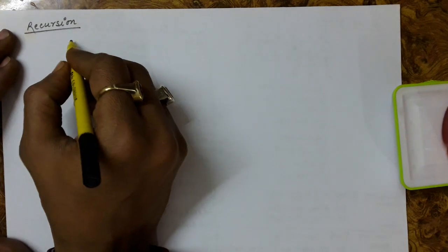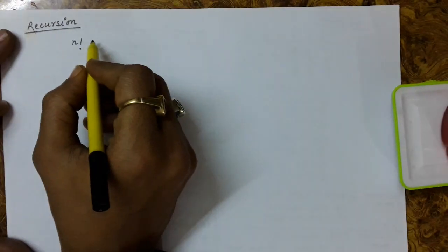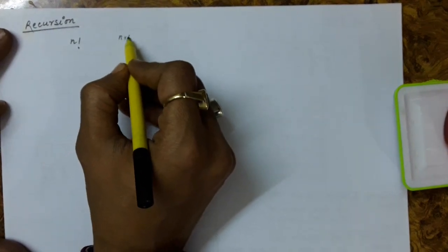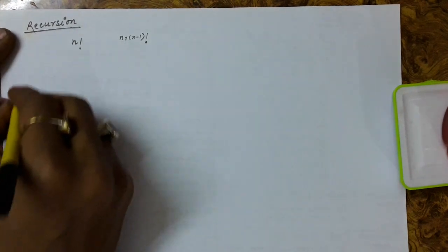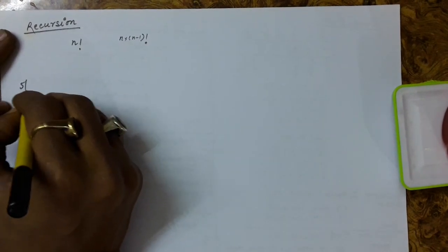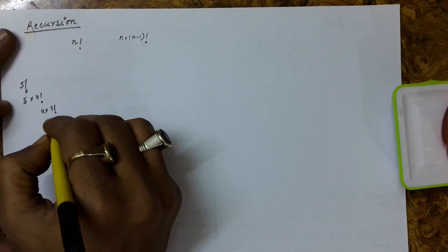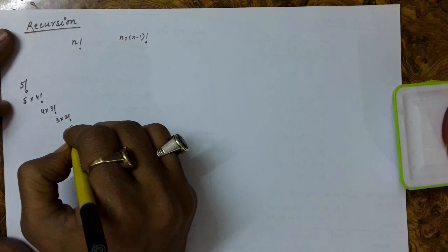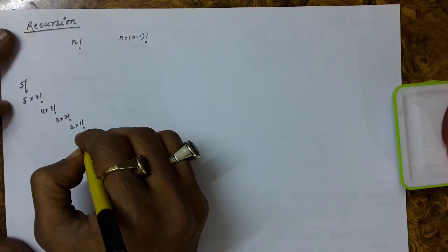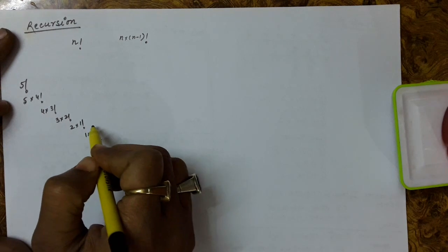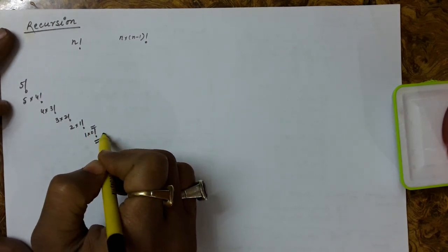Suppose you want to find the factorial of a number. Factorial is defined by itself: factorial(n) = n * factorial(n-1). So if you are finding factorial of 5, it is 5 * factorial(4); factorial(4) is 4 * factorial(3); factorial(3) is 3 * factorial(2); factorial(2) is 2 * factorial(1); factorial(1) is 1 * factorial(0). You cannot reduce it further from 0, so this is the base condition: factorial(0) = 1.